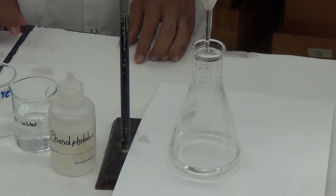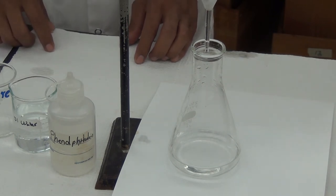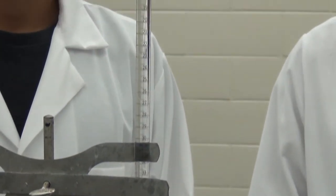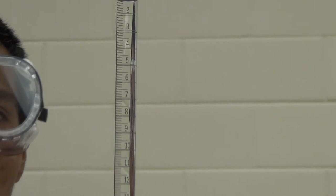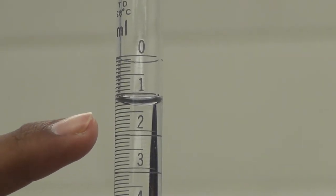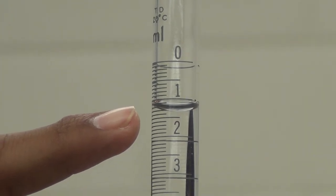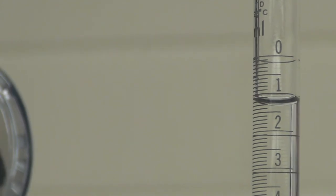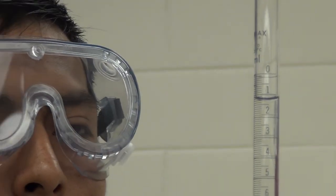To find the volume of the titrant used, we need to take two measurements from the burette, one before we begin, the initial volume, and one at the endpoint, the final volume. To take a measurement, find the level of the solution and read the value at the bottom of the meniscus. Your eyes must be level with the meniscus for an accurate reading. Here the initial volume is 1.29 milliliters.